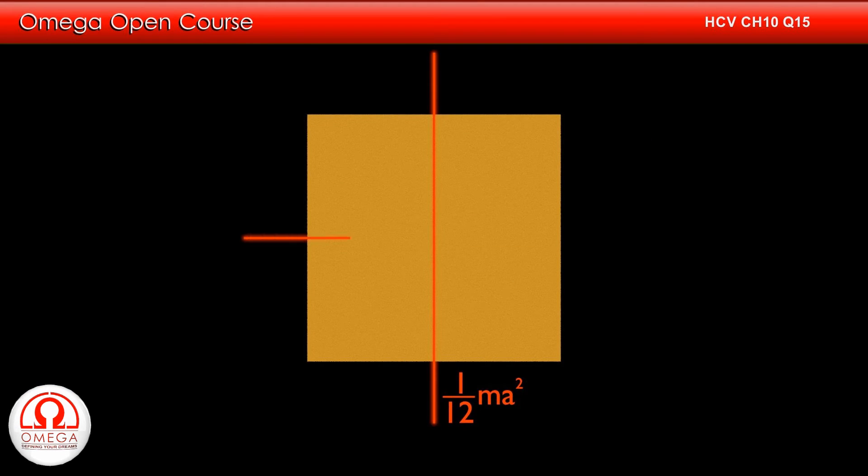Let's take another axis perpendicular to this axis. The moment of inertia about this axis 2 is 1 by 12 ma square.